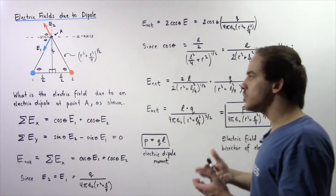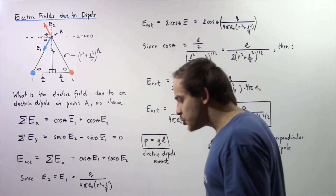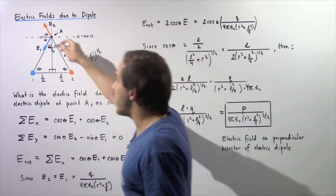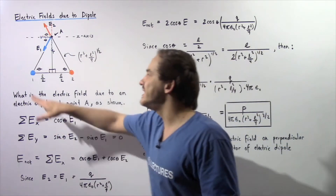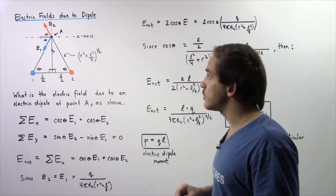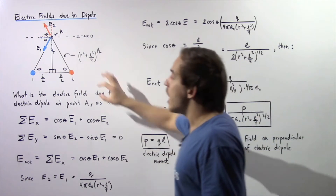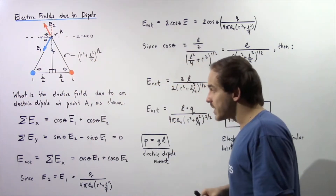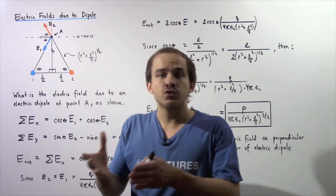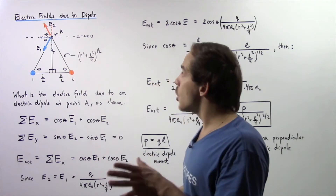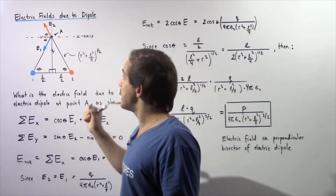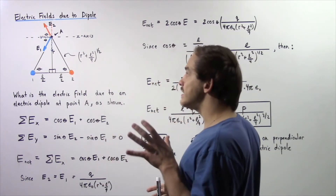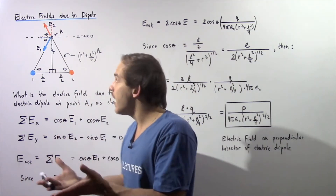What is the electric field due to the electric dipole at point A? We have two point charges, so there will be two electric fields at point A. E1 is the electric field due to the negatively charged point charge, and E2 is due to the positive point charge. E2 points away and E1 points directly into point charge number one. Let's begin by finding the sum of the electric fields along the x-axis and y-axis, noting that both electric field vectors point at an angle with respect to the x-axis, so we need to find the x and y components separately.